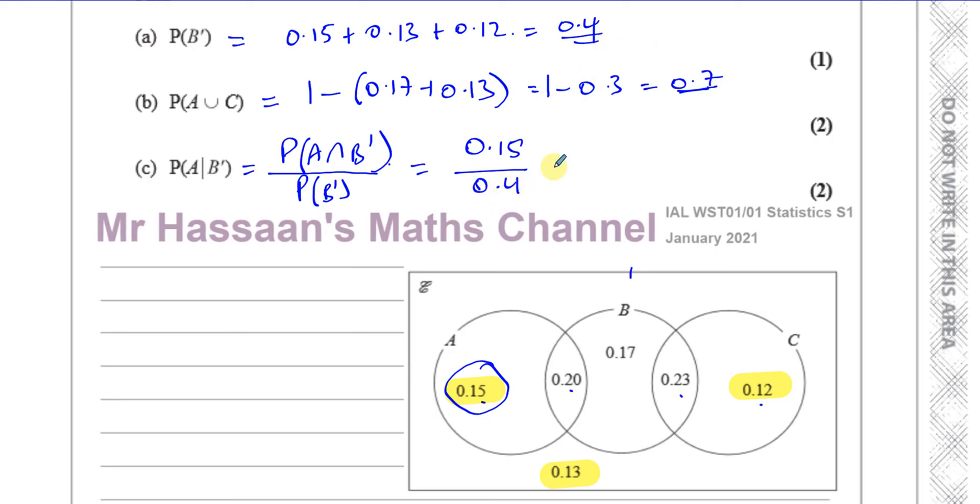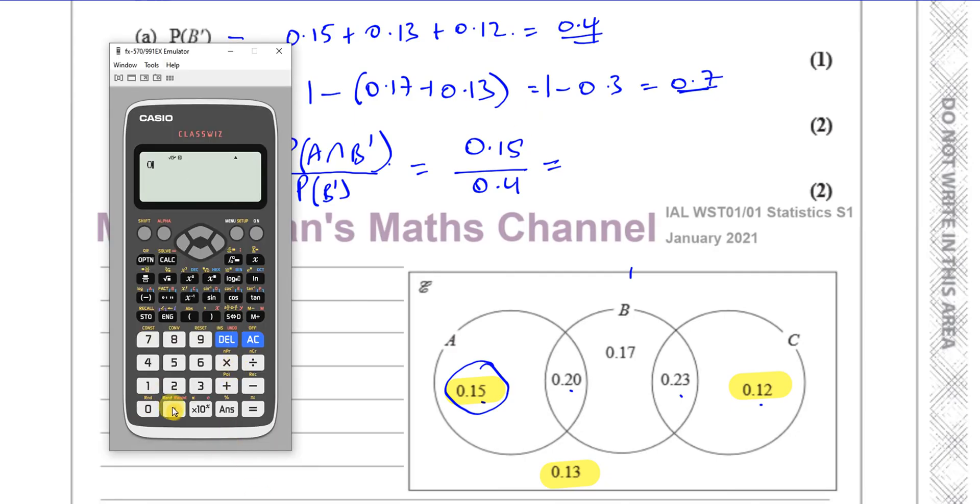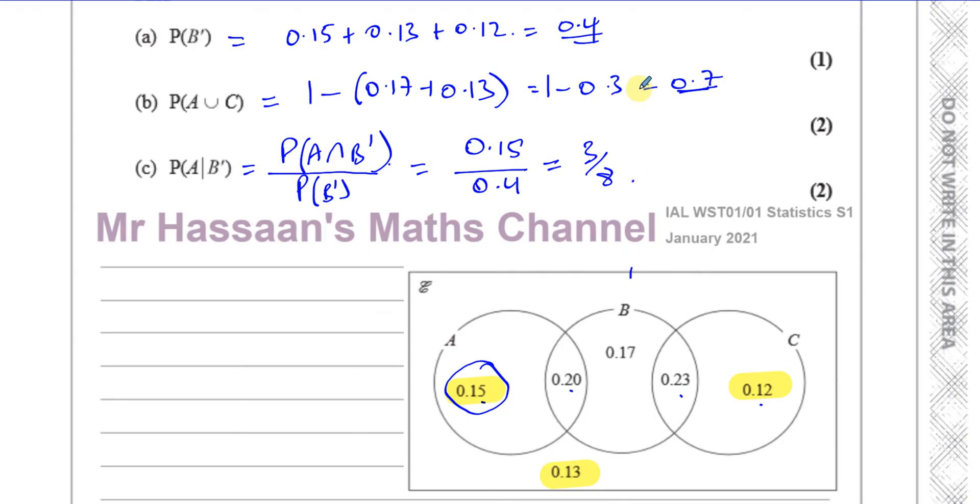So the probability of A intersection B complement is the probability 0.15 over the probability of everything outside of B, which is going to be what we found there, which is 0.4. So that's 0.15 over 0.4, which you can say is 0.15 divided by 0.4 gives you 3 over 8. That's 3 over 8. That is the probability of A given B. So we limit our sample space just to those things which are outside of B, and then we look to see what is the intersection between what's outside of B and A. Well, it's just 0.15.